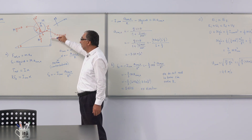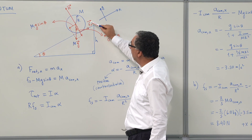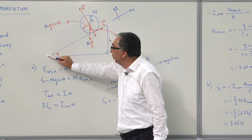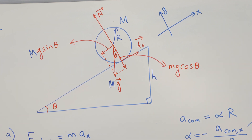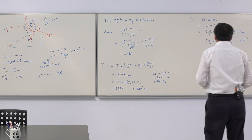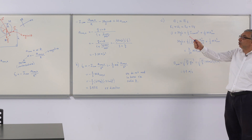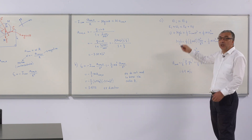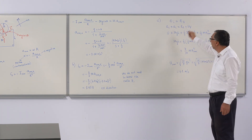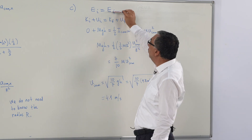For the last part, the height h is 1.2 meters. The ball starts rolling from rest at the top of the incline. We want the speed at the bottom. We use conservation of energy — the static frictional force only causes rotation without dissipating energy, so energy is conserved.